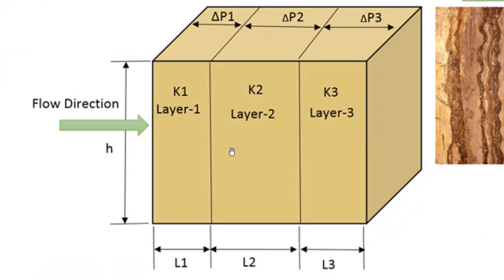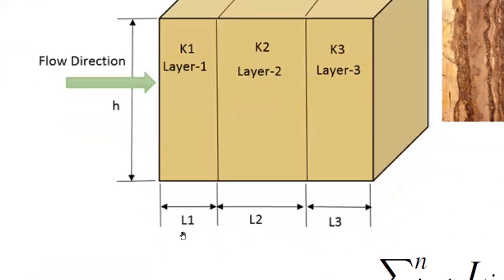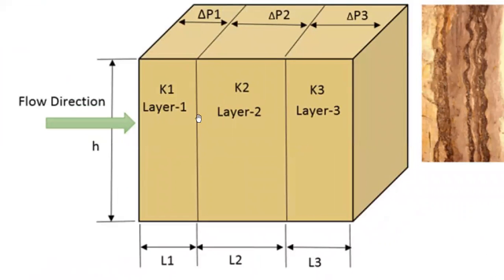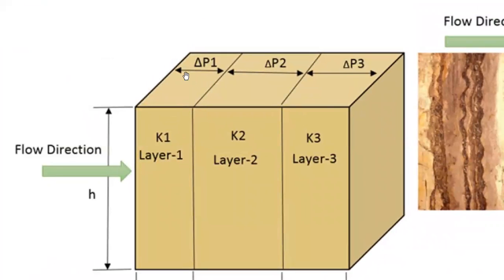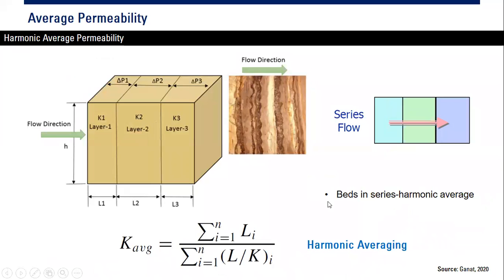For harmonic averaging, you have layer 1, layer 2, layer 3 with permeabilities k1, k2, k3 and lengths l1, l2, l3 with the same thickness. They will experience different delta P: delta p1, delta p2, delta p3. To get the average permeability, we sum all the lengths l1 + l2 + l3 divided by the summation of (l/k) for each layer.